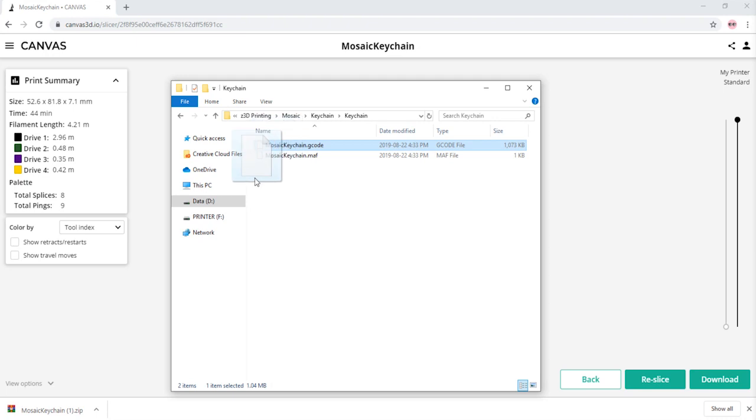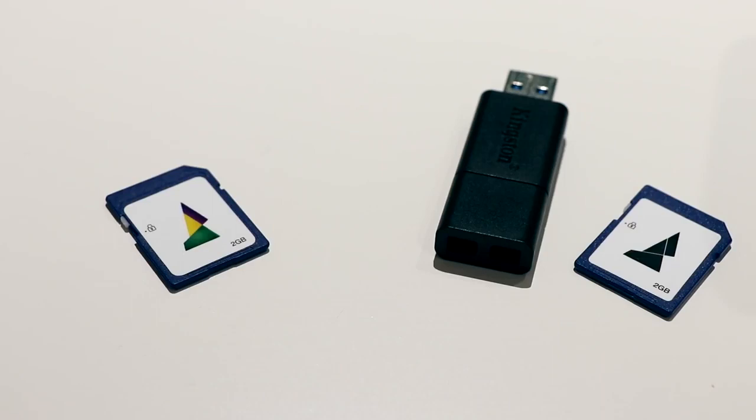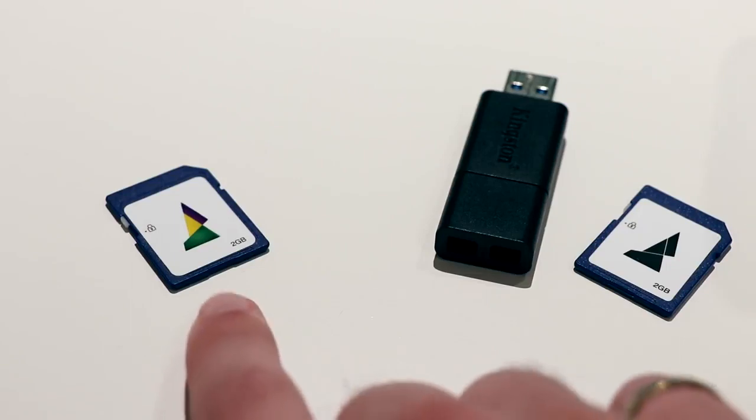Next, we'll move the print file onto an SD card or USB drive, whichever your printer uses. Then, we'll move the MAF file onto the SD card that came with the Palette 2. Now, we have our printer file for our printer either on our USB or SD card here, and we have our MAF file on our SD card for Palette 2 here.